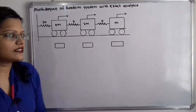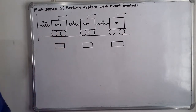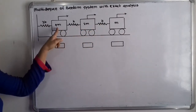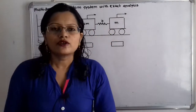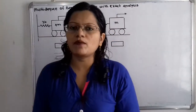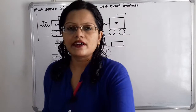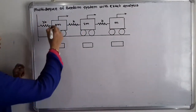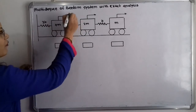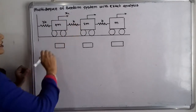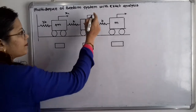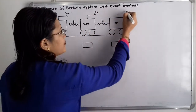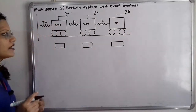We have one system of spring and mass. The spring stiffnesses are 3k, k, and k, and the masses are 4m, 2m, and m. This system is in motion. We will assign different displacements for these masses: for mass 4m the displacement is x1 in the forward direction, for mass 2m the displacement is x2, and for mass m the displacement is x3.